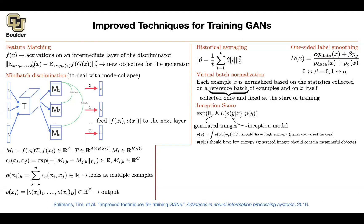You had a hidden or unobserved state — that was Z. That's a vector, a low-dimensional vector. You are putting a distribution on that. In both cases — for variational autoencoders and for GANs — you are putting a distribution on your hidden state. What does it mean, putting a distribution on it?